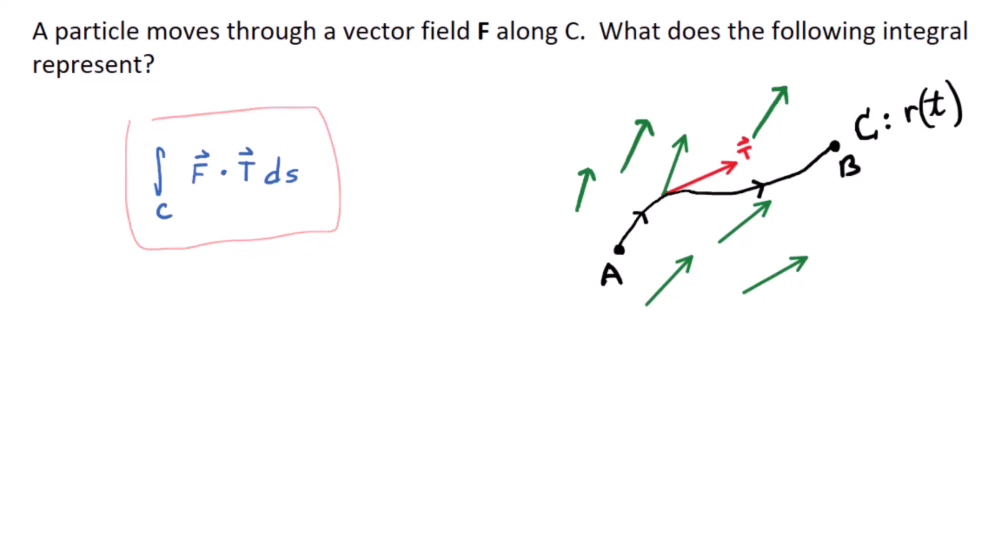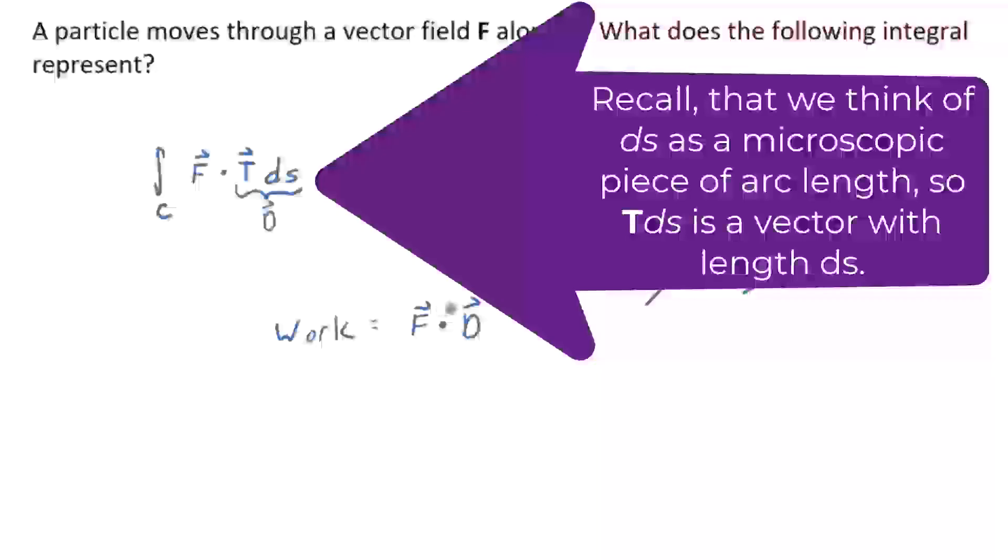So first off, remember the dot product formula for force. Remember that? Or for work, really, is what I meant to say. It involves a dot product though, and it involves a force. Work is equal to the force vector dotted with, we called it D, right? F dot D. Remember that? It's been a while. Well, if you realize that T times DS is your distance vector D here, and F is your force vector, we've got F dotted with TDS. It's got to be work. Right away you arrive at it if you remember the dot product definition of work.